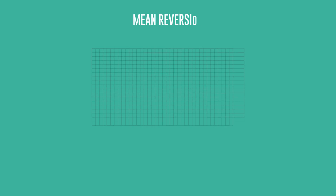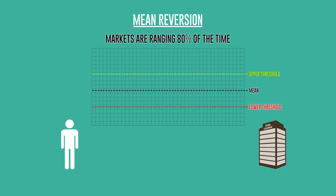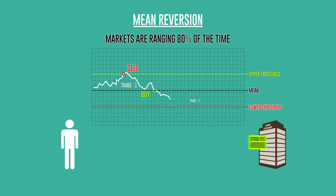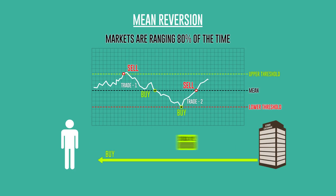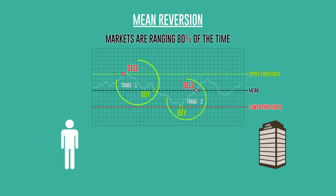Another basic kind of algorithmic trading strategy is the mean reversion system, which operates under the assumption that markets are ranging 80% of the time. People who employ this strategy typically calculate an average asset price using historical data and take trades in anticipation of the current price returning to the average price.